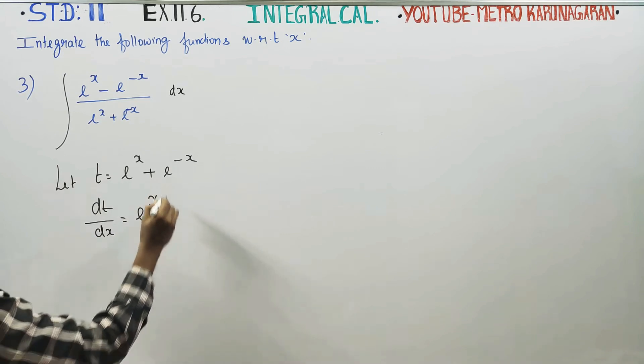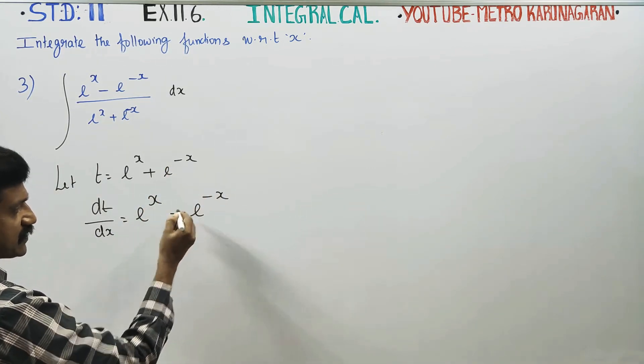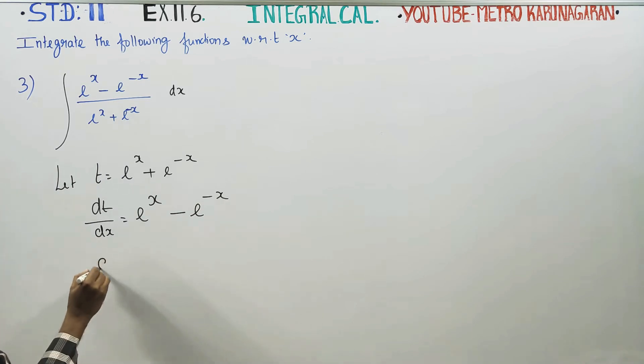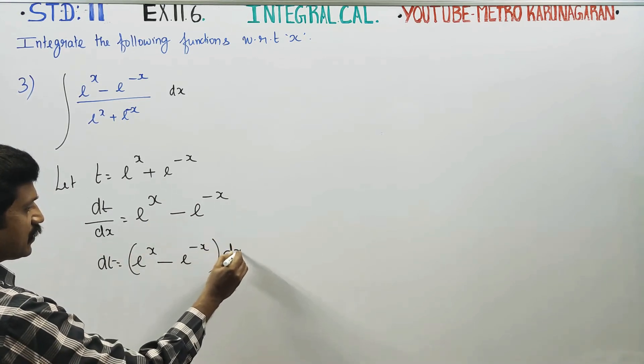E power X differentiate gives E power X. And E power minus X differentiate gives E power minus X with a minus from the chain rule. Cross multiply: dT equals E power X minus E power minus X. Cross multiply to get dX.